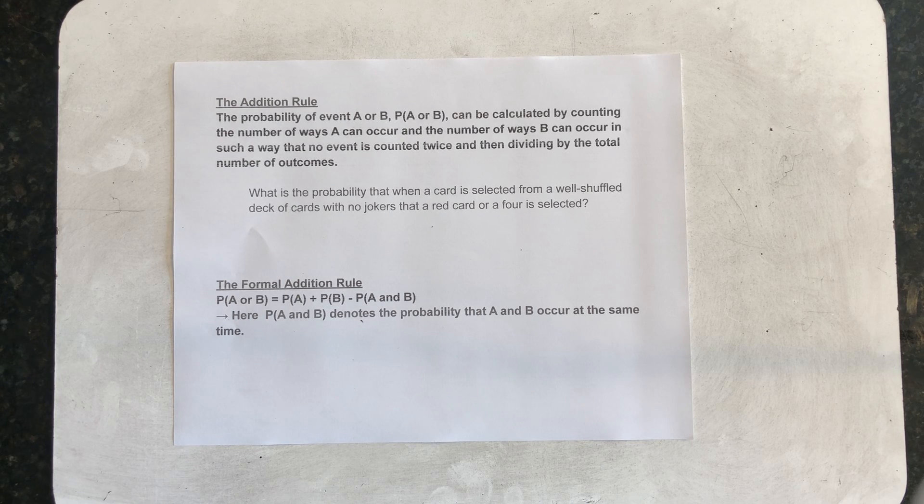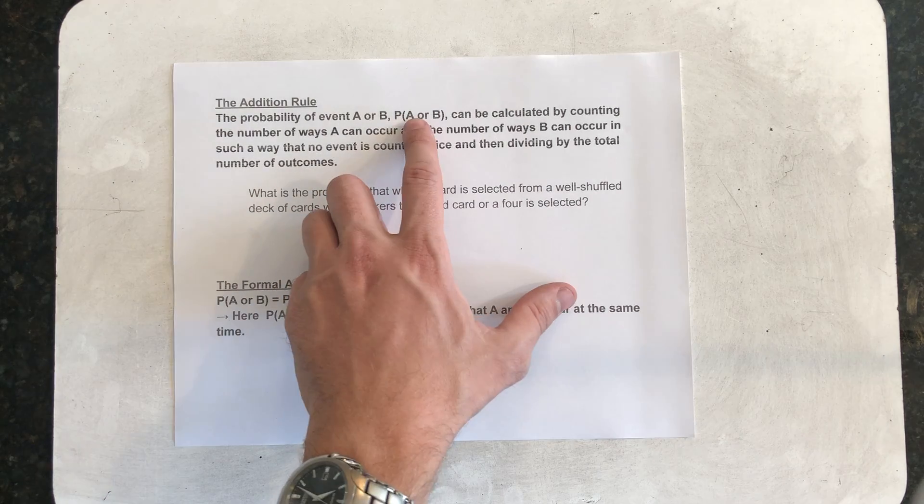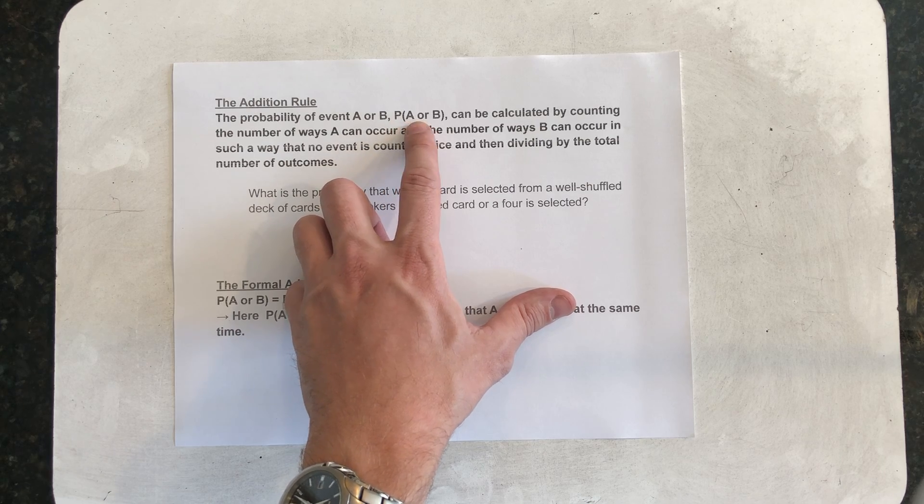A compound probability is a probability of one or more events put together. The addition rule helps us calculate OR probabilities. The probability of event A or B, denoted by this collection of symbols, the probability of A or B,